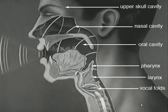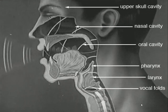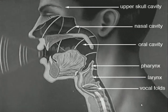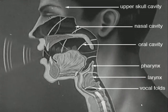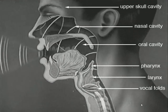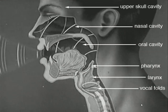When we articulate certain speech sounds, the vocal cords are kept close to each other loosely. When the air from the lungs passes through them, the pressure of the air makes them open and close rapidly. This rapid opening and closing of the vocal cords is called vibration of the vocal cords.